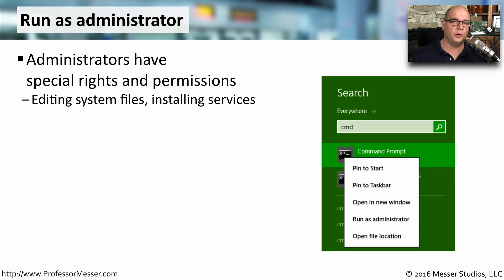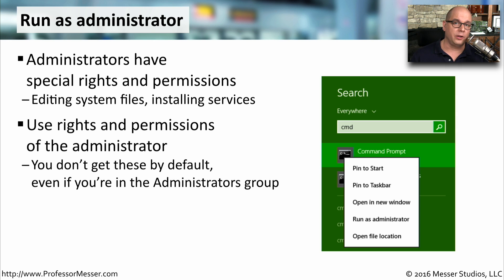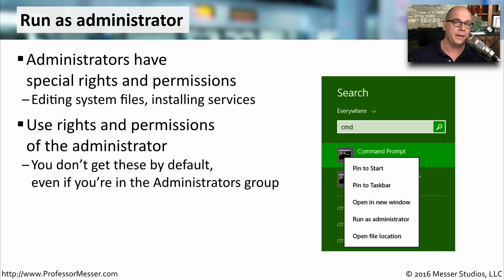During the normal use of your Windows operating system, you're not running as an administrator — you're instead running as a regular user. Administrators have additional rights and permissions that allow them to administer the system. So if you need to edit any system files or install new applications or device drivers, you need administrative rights. Even if you are a regular user who has been added to the administrators group in Windows, you still may not be able to perform a number of these administrative functions.